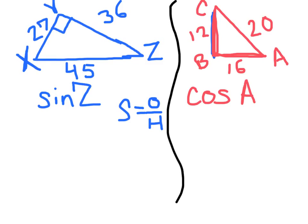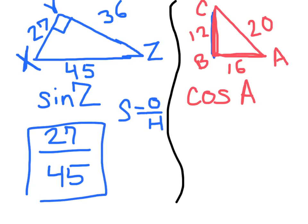And looking at angle Z, the opposite is going to be 27. So that's across from Z. So our opposite is 27. And the hypotenuse is what is across from the 90 degree angle, which is the 45. So sine Z is equal to 27 over 45.